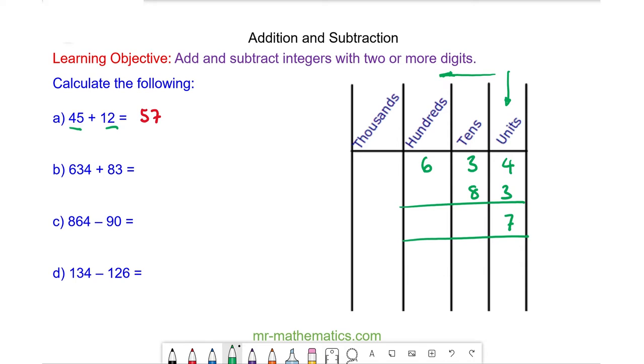We have 3 tens and 8 tens, which in total is 11 tens. When you think about 11 tens, we actually have 1 hundred and 1 ten. And then we have 6 hundreds plus the 1 we carried over, which is 7 hundreds in total, so 717.